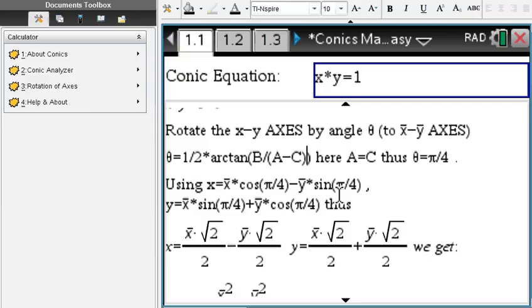Enter a polar equation such as xy = 1. And as you may know, the rotation of axis allows you to rotate your axis by degree, by an angle here of 45 degrees, π/4, to eliminate the xy term.